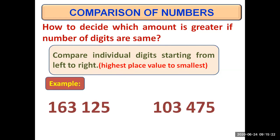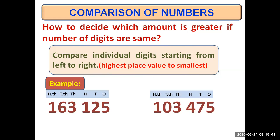For example, we have two six digit numbers: 163125 and 103475. We will first mention the place values so we know the highest place value. We can see that the highest place value in both numbers is hundred thousands. We compare the digits at hundred thousands place and see both are one — both are equal. But it doesn't mean both numbers are equal; only the digits at hundred thousands place are equal.